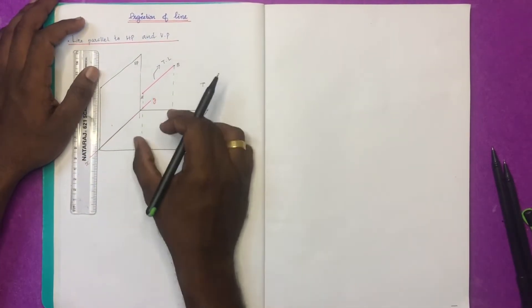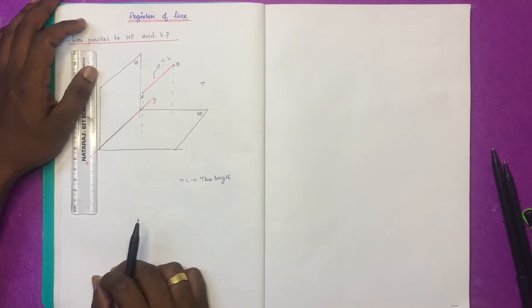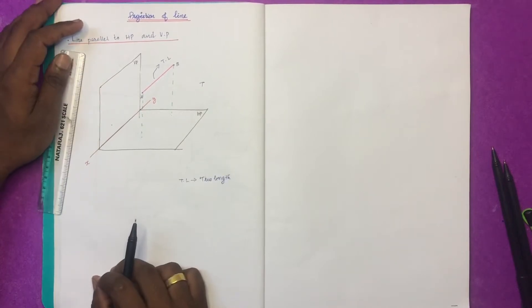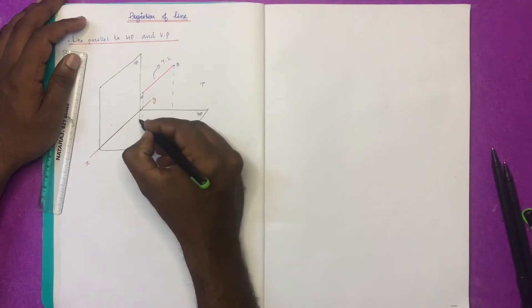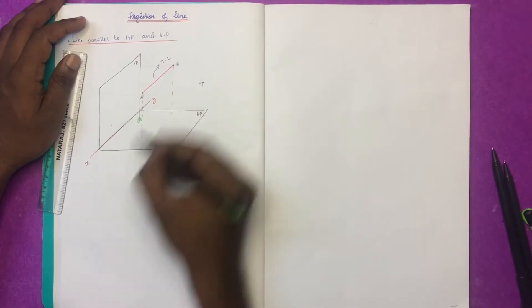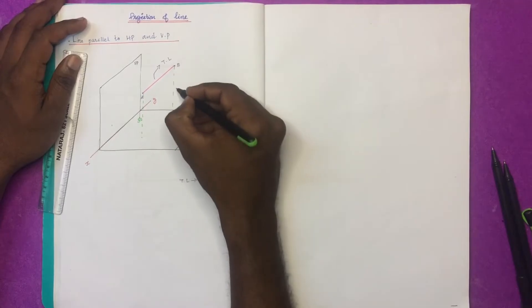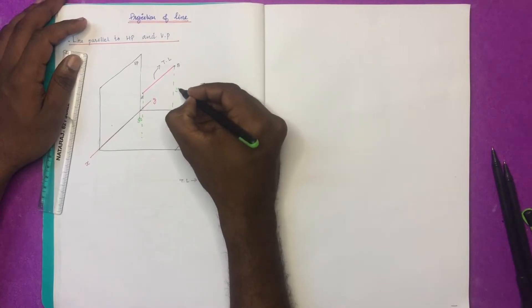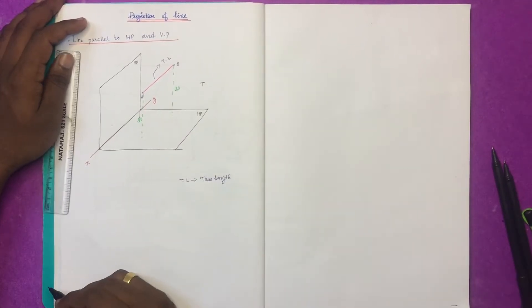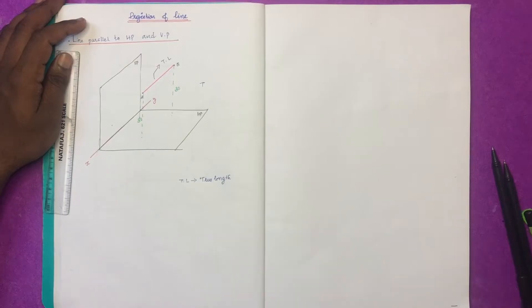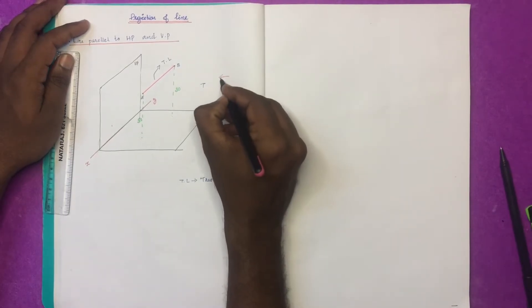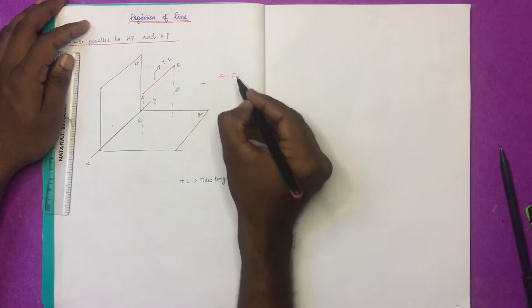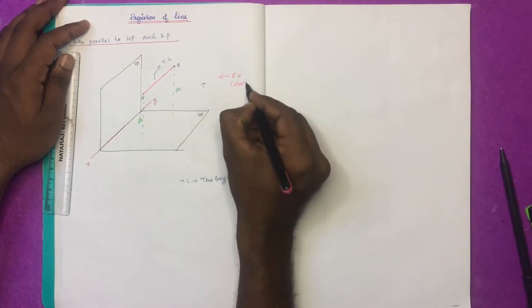If the height is a point equal to the HP, I will show you the height of the HP. This is the front view — the elevation.